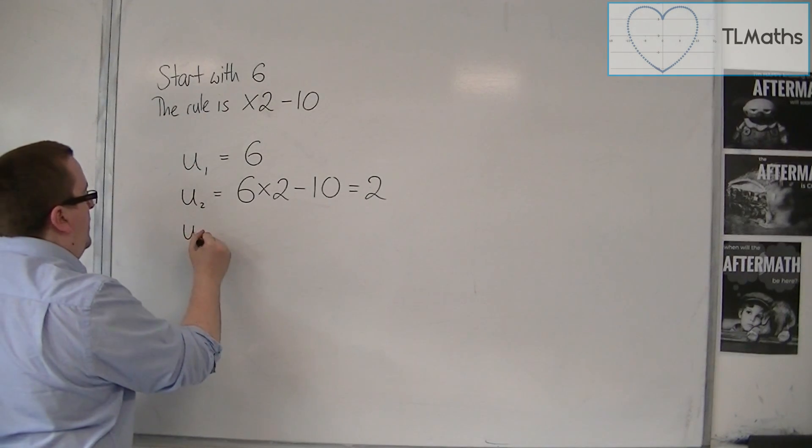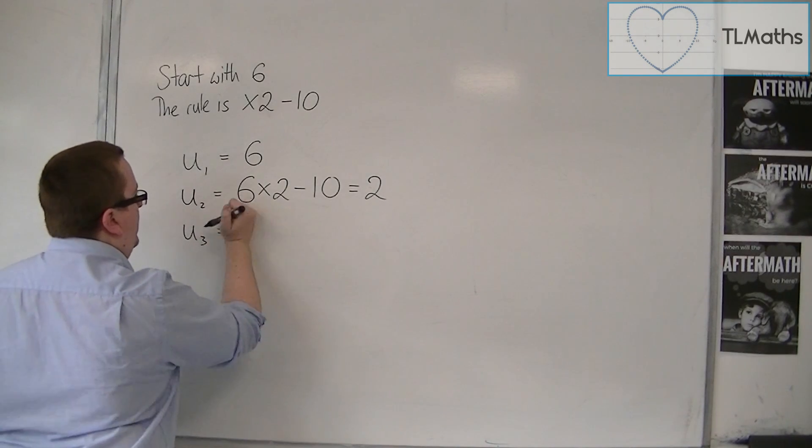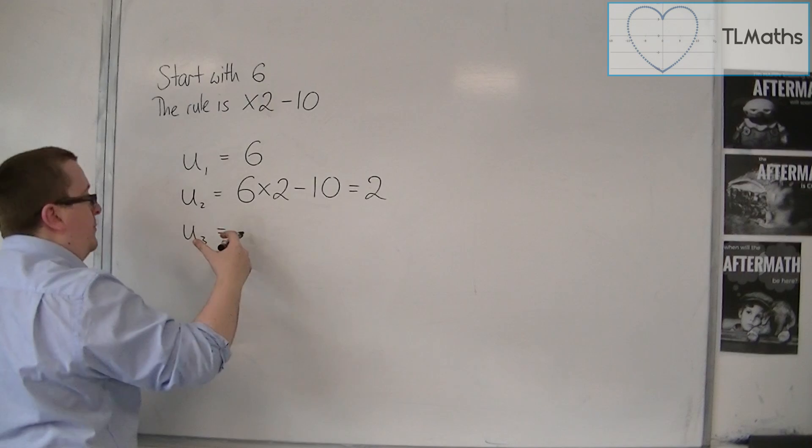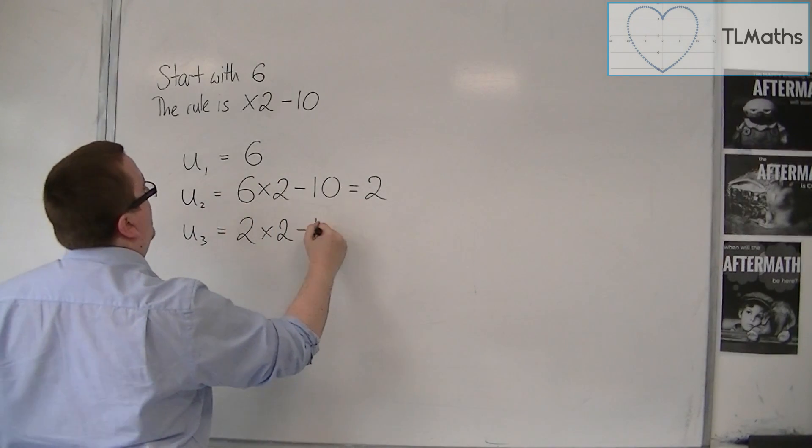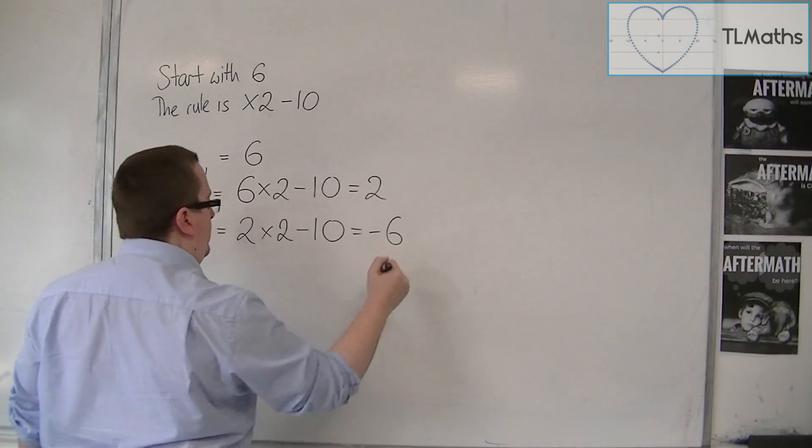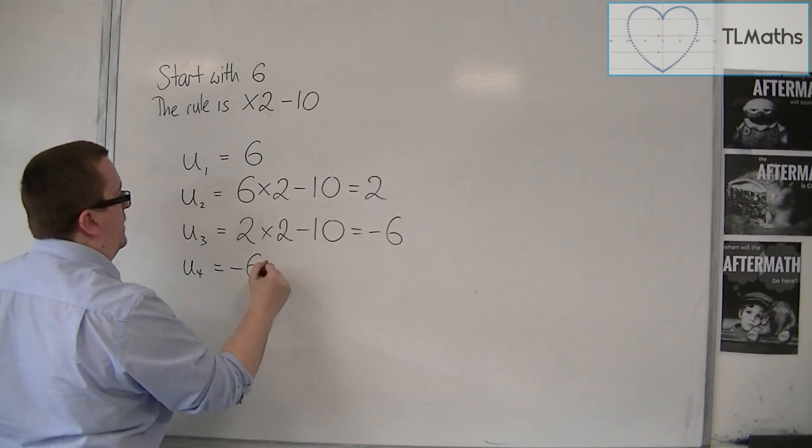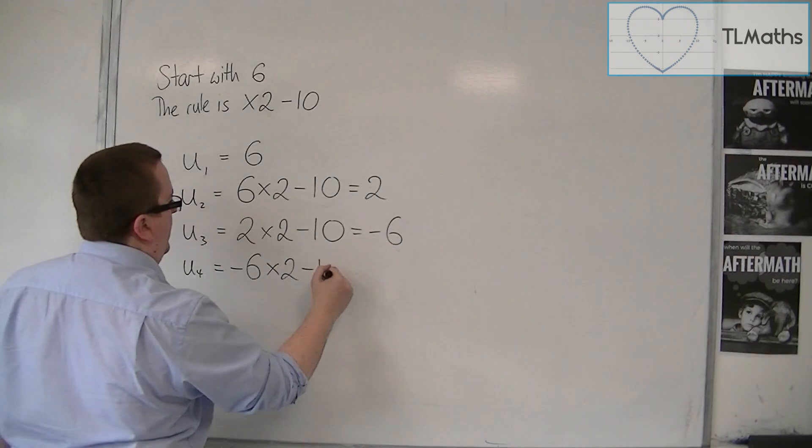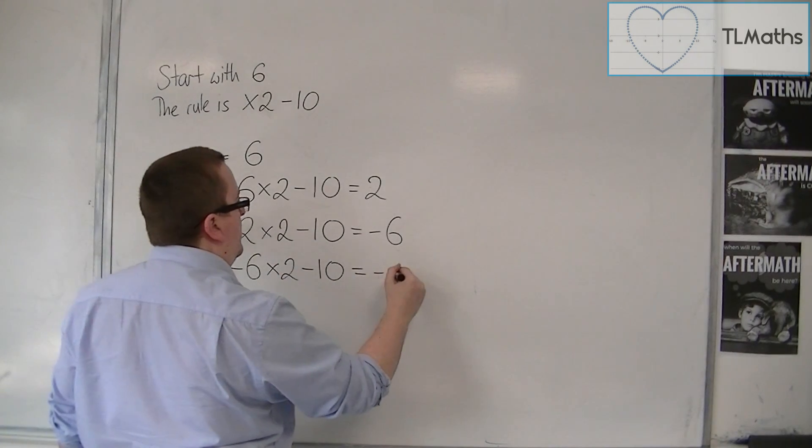Then the third term is the second term times by 2 and then take away 10, so I'd have minus 6. Then the fourth term is the previous term times by 2, take away 10. So, we'd have minus 12, take away 10, so minus 22.